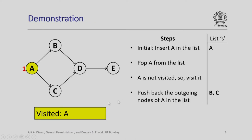Let us demonstrate this process by again re-looking at the graph which has these 5 nodes. The steps are initially we start with A which is the first node. We insert A in the list. So list S contains A. Now we pop A from the list. Since A is not visited, we visit it. We find that A has outgoing edges to B and C. So we will push back the outgoing nodes in the list.